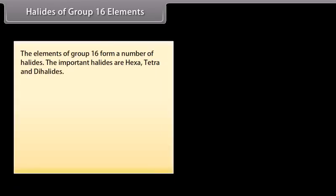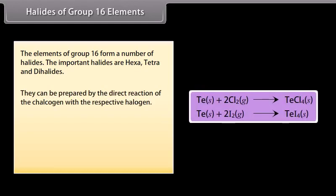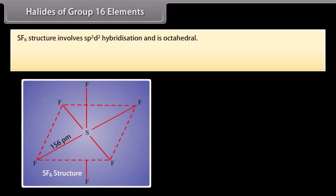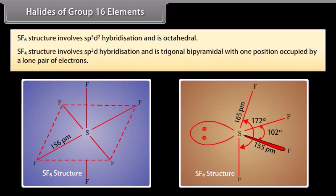Halides of group 16 elements. The elements of group 16 form a number of halides. The important halides are hexa, tetra and dihalides. They can be prepared by the direct reaction of the chalcogen with the respective halogen. The compounds of fluorine with oxygen are called fluorides. As chlorine, bromine and iodine are less electronegative than oxygen, compounds of these halogens with oxygen are called oxides. SF6 structure involves sp3d2 hybridization and is octahedral. SF4 structure involves sp3d hybridization and is trigonal bipyramidal with one position occupied by a lone pair of electrons.